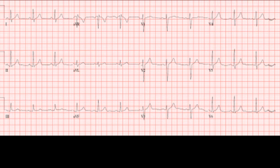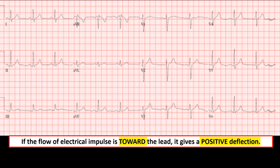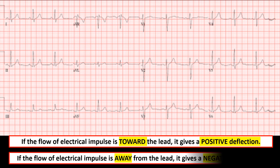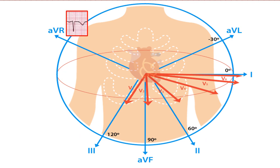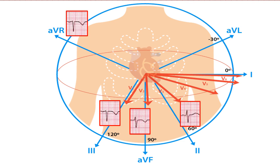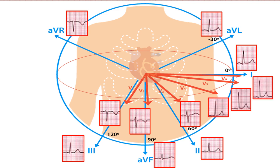This can be explained by the golden rule in electrocardiogram reading: if the flow of the electrical impulse is towards the lead, it gives a positive deflection; if the flow of the electrical impulse is away from the lead, it gives a negative deflection. Knowing that the electrical impulse starts from right to left, inferiorly, laterally, and posteriorly, right-sided leads like AVR, V1, and V2 normally have negative deflection. The transition from negative to positive deflection happens at V3 or V4. Since the electrical impulse flows inferiorly to the left, laterally and posteriorly, leads 2, 3, AVF, 1, AVL, V4, V5, and V6 normally have positive deflection.